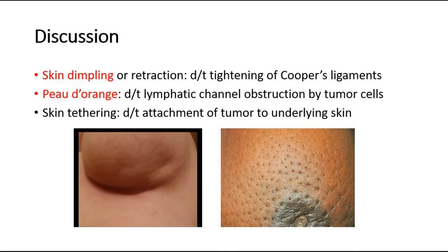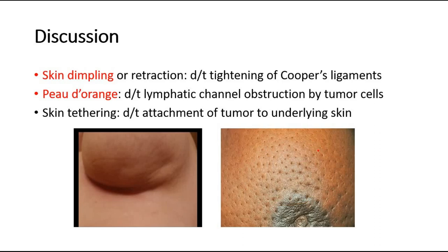Moving on to the discussion — these are some of the terminologies seen in breast examination. Skin dimpling or retraction, shown in the first picture, is due to tightening of the Cooper's ligaments in the breast. Peau d'orange, shown in the second picture, is a commonly seen appearance in breast cancer, due to obstruction of the lymphatic channels caused by tumour cells. Skin tethering is another terminology and happens due to attachment of the tumour to the underlying skin.